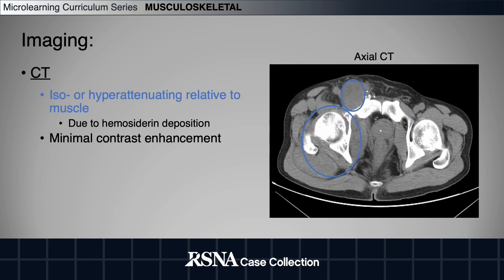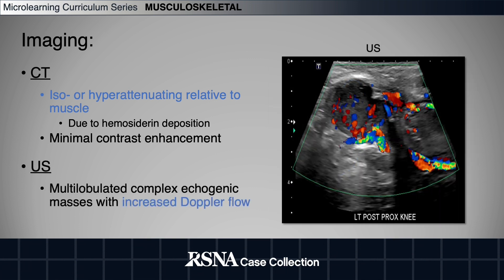Findings on CT may consist of localized nodular mass lesions or diffuse synovial thickening. Lesions may be either iso- or hyperattenuating relative to muscle due to hemosiderin deposition, and often show minimal enhancement post-contrast administration. On ultrasound, lesions may appear as multi-lobulated, complex echogenic masses with increased Doppler flow.